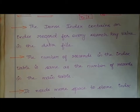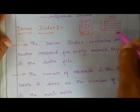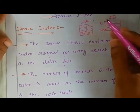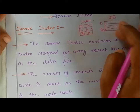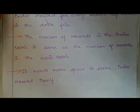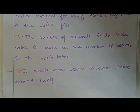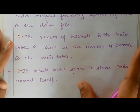The number of records in the index table is the same as the number of records in the data table. In the index table, there are 10 records matching those in the data blocks. It needs more space to store the index records because we store indexing for all records.